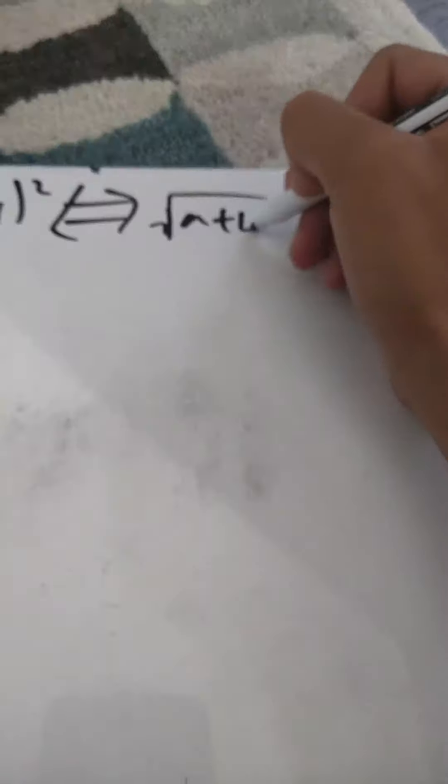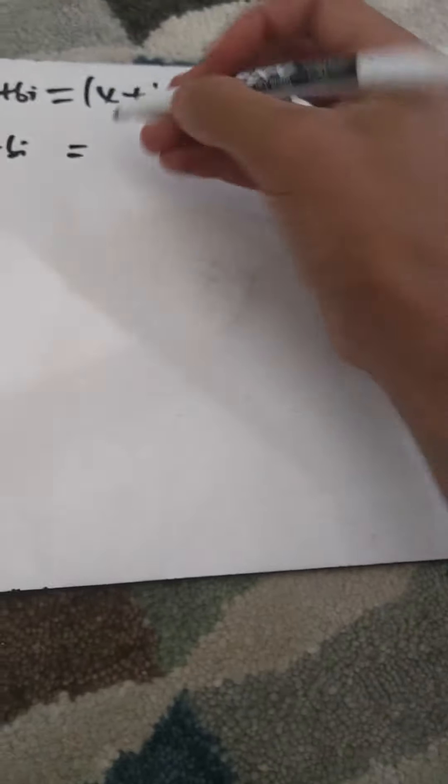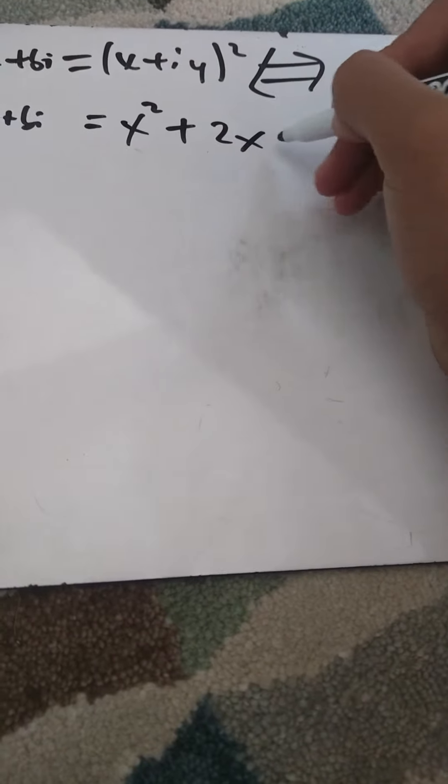We have a + bi. We have a + bi equals x + iy squared, so we can conclude that the square root of this complex number a + bi equals x + iy. And now we can say a + bi equals x² + 2xy·i − y², which equals x² − y² + 2xy·i.